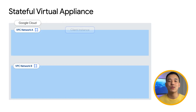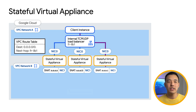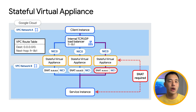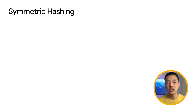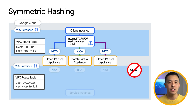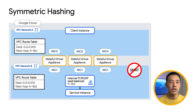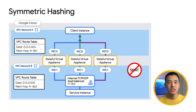The next feature is something crucial when deploying stateful virtual appliances in Google Cloud: symmetric hashing. Prior to this launch, whenever deploying stateful virtual appliances in a highly available manner, it would require source NAT to ensure the return traffic would be properly routed back to the same appliance. With the launch of symmetric hashing, we simplified operations for stateful virtual appliances by guaranteeing traffic of the same flow gets the same hash. In other words, the hash doesn't change when the source IP and port is swapped with the destination IP and port.